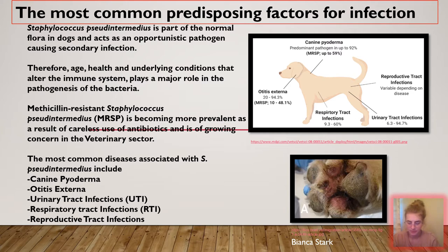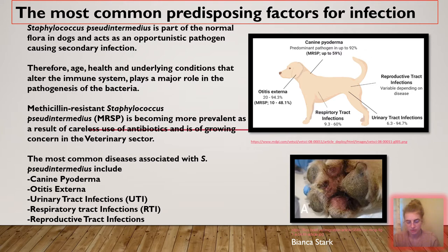Dogs are the most common animal species infected with S. pseudintermedius. According to studies, S. pseudintermedius is involved in 84.7 percent of canine diseases such as canine pyoderma, otitis externa, and systemic infections within the urinary, respiratory, and reproductive tract. The bacteria is most common in pets with recurrent skin infections due to underlying causes that lead to a compromised immune system.